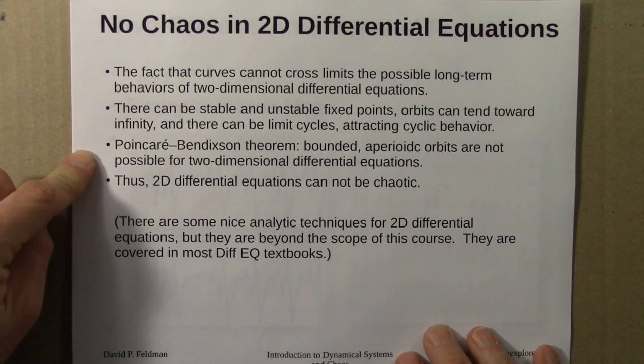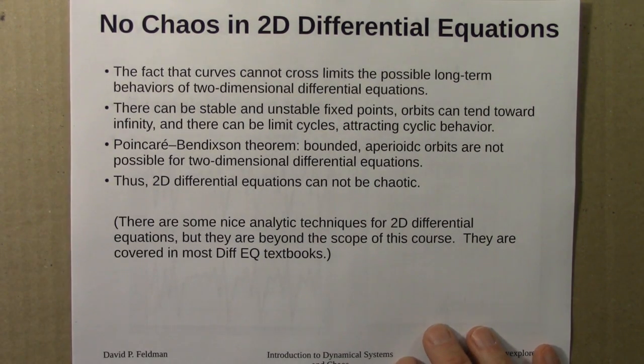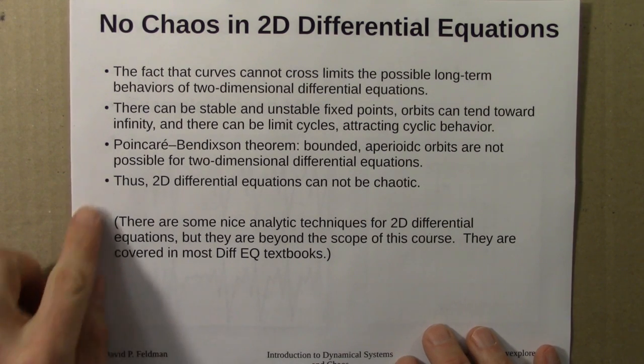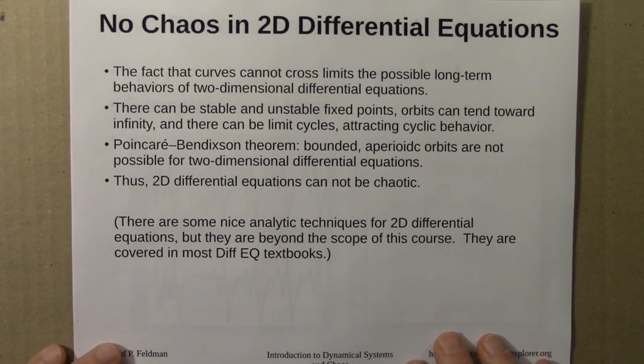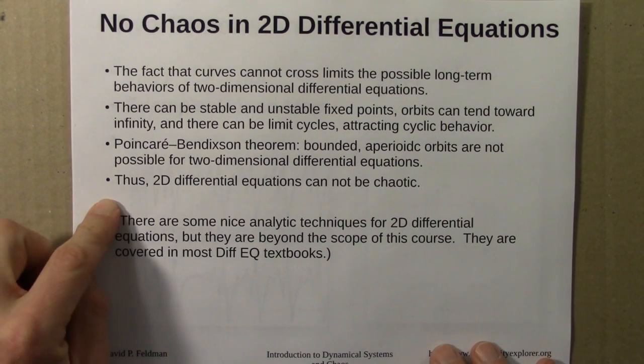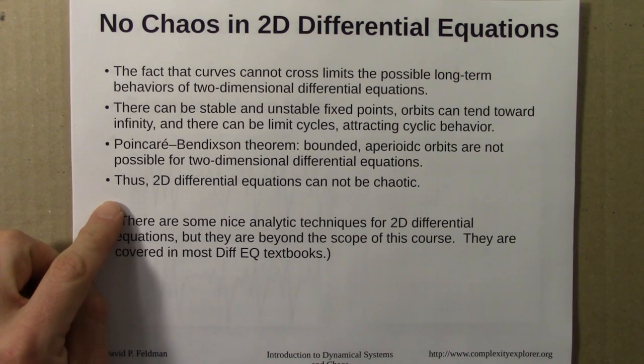There's a famous and important result known as the Poincaré-Bendixson theorem, which says, simplifying somewhat, that bounded aperiodic orbits are not possible for two-dimensional differential equations. Of course, that assumes that the right-hand sides of the differential equations aren't crazy and discontinuous or something like that. So the main consequence of this is that we can't see chaotic behavior in two-dimensional differential equations of this sort. We can't see aperiodic bounded orbits.